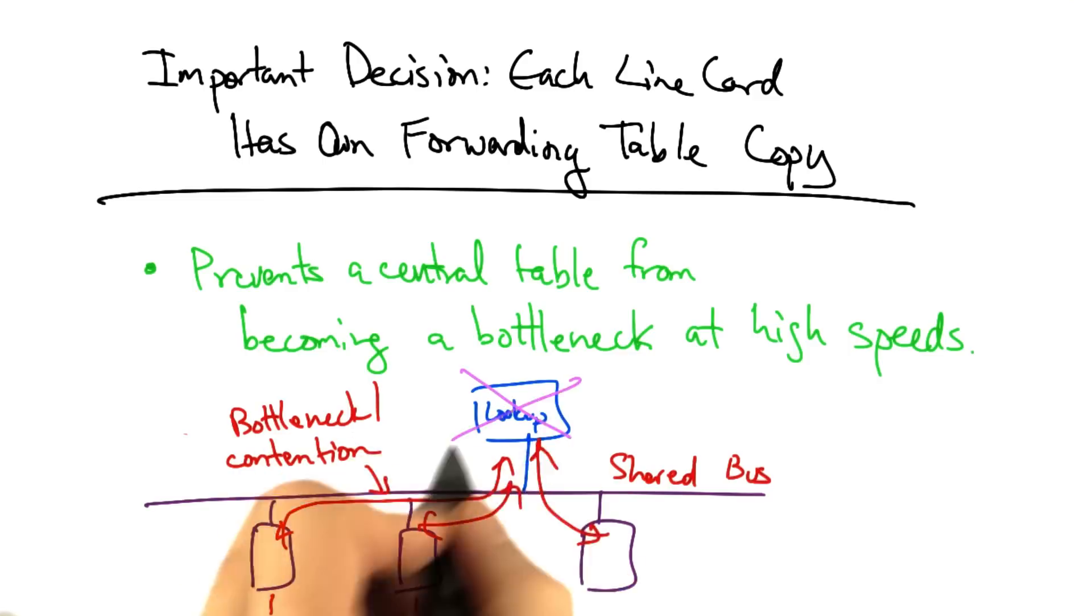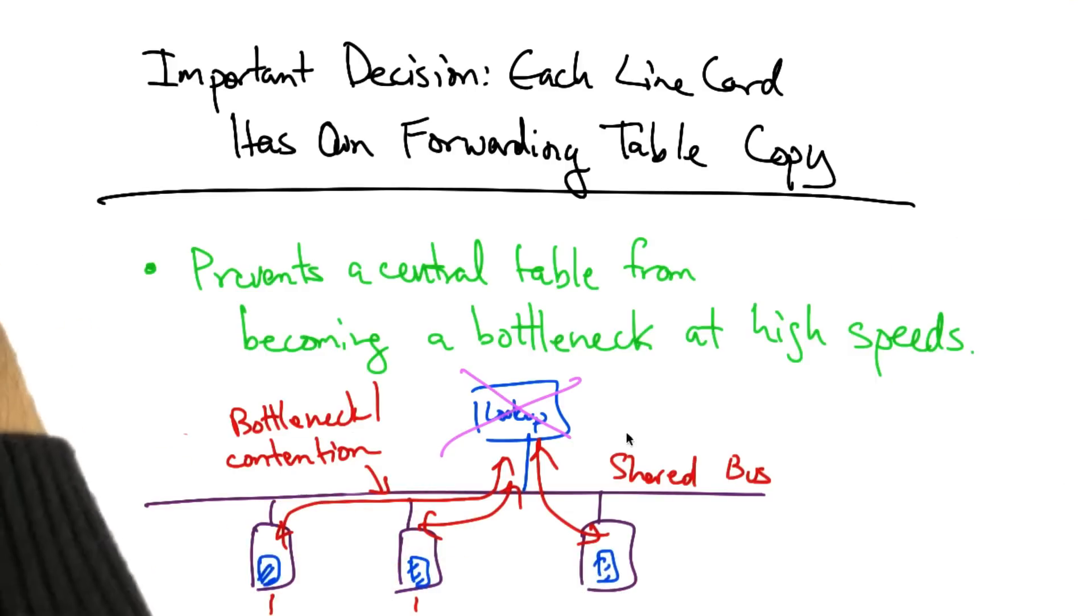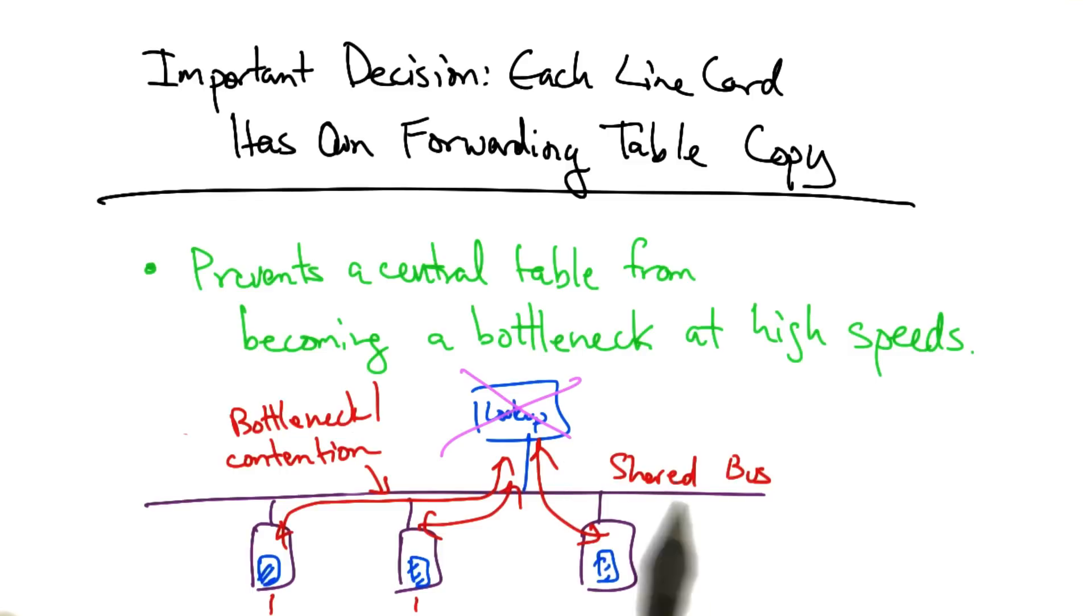The solution was to remove the shared memory and instead place copies of the forwarding table on each line card. In summary, an important innovation in the design of these routers was to eliminate the shared bus and place the lookup tables on individual line cards.